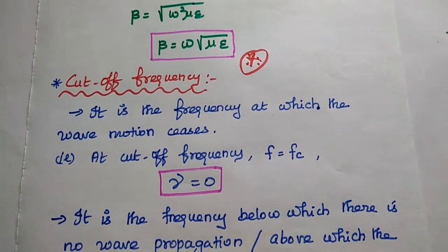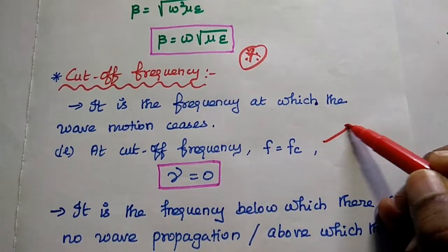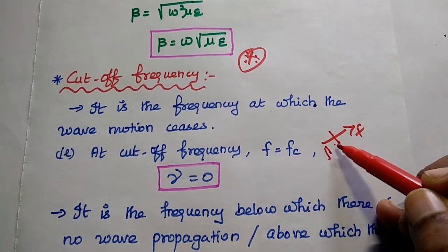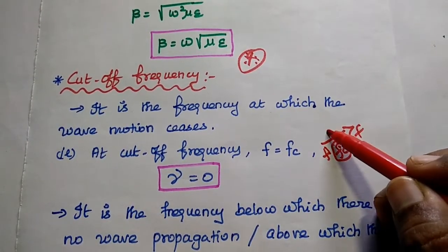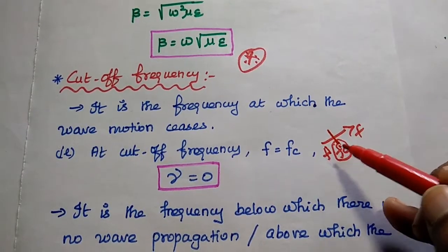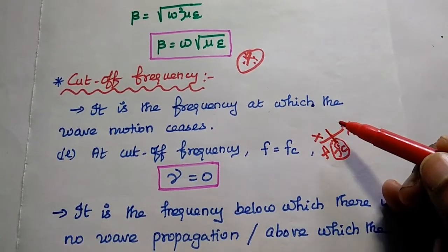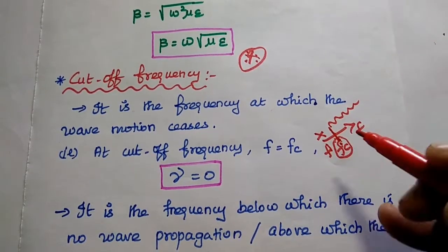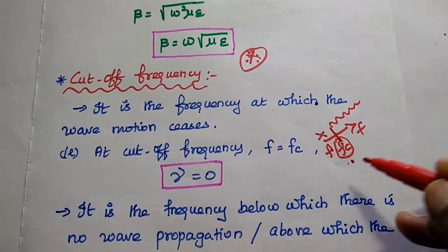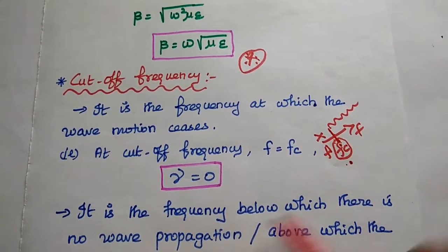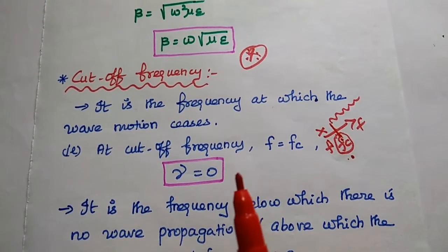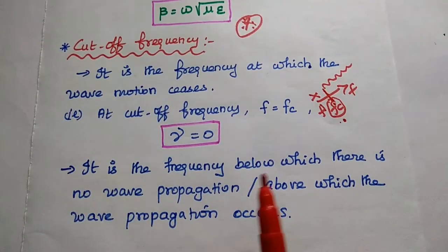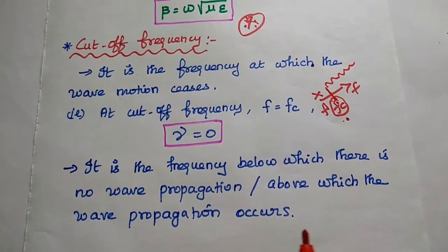Next, we are going to find out the cutoff frequency. Cutoff frequency is the frequency at which the wave motion ceases. If the operating frequency is less than the cutoff frequency, there is no wave propagation. The frequency above the cutoff frequency allows wave propagation. This is the critical frequency to start wave propagation in a particular direction. At cutoff frequency, the gamma value is equal to 0.